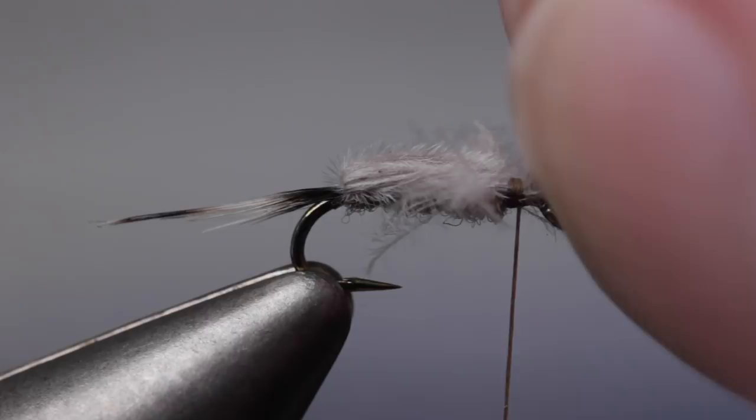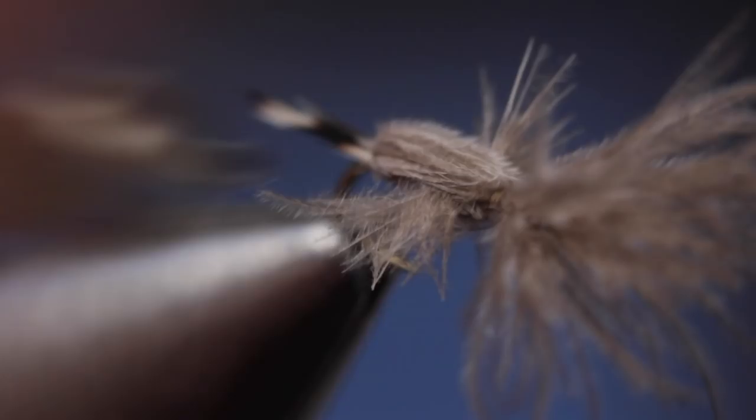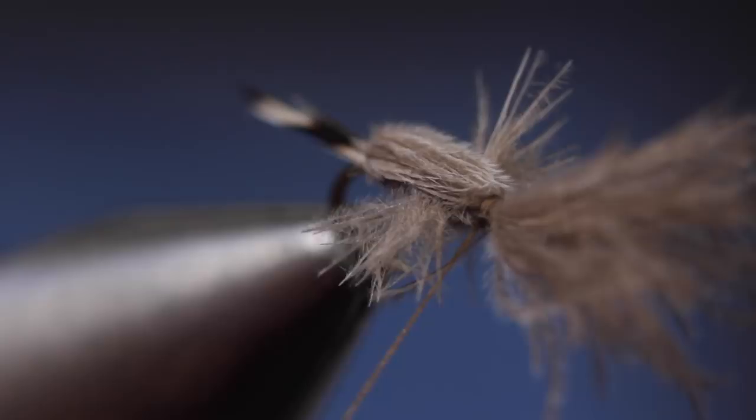Then, do a 5 or 6 turn whip finish and snip or cut your tying thread free. Finally, lift the remaining fibers up and snip them off to form a small head.